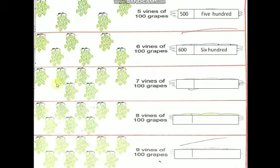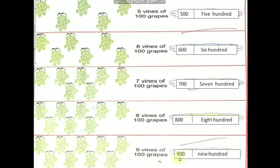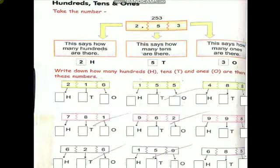Come to the next one. 7 vines of 100 grapes — 7 into 100 is 700. Number 700 and number name: S-E-V-E-N H-U-N-D-R-E-D. You have to write 700. Next, 8 vines of 100 grapes — 8 into 100 is 800. Number name: E-I-G-H-T H-U-N-D-R-E-D. Write 800. And 9 vines of 100 grapes — 9 into 100 is 900. Number name: N-I-N-E H-U-N-D-R-E-D. Write 900. Understood, children — number names.